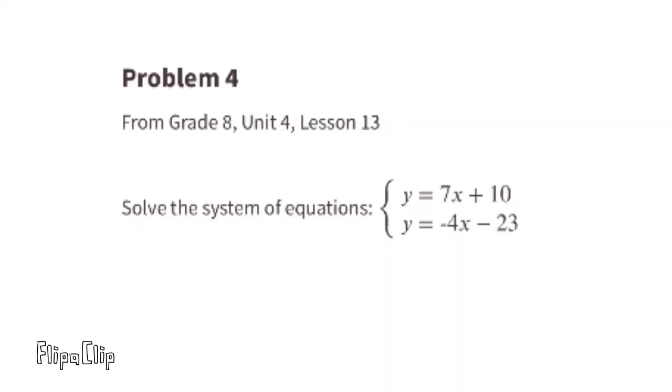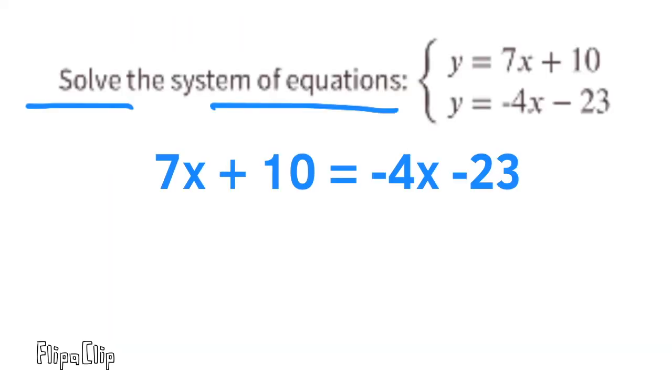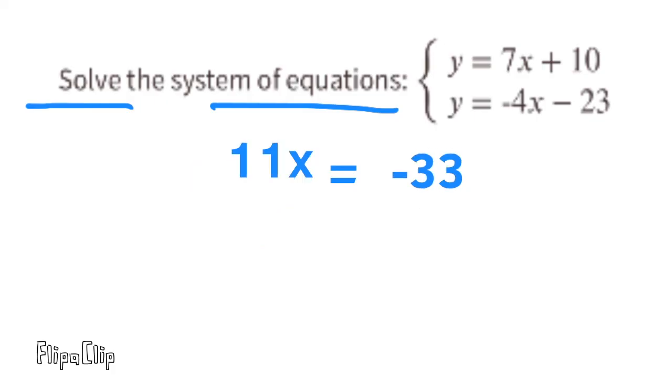Problem number 4 from 8th grade unit 4, lesson 13. Solve the system of equations. We can do that by making the two equations equal to each other. 7X plus 10 equals negative 4X minus 23. Add 4X to both sides. 0X or 0 times X equals 0. So on the right side of the equal sign, we just have minus 23 or negative 23. Subtract 10 from both sides. Now the equation reads 11X equals negative 33. Divide both sides by 11. 11X divided by 11 equals 1X, or X. And negative 33 divided by 11 equals negative 3.